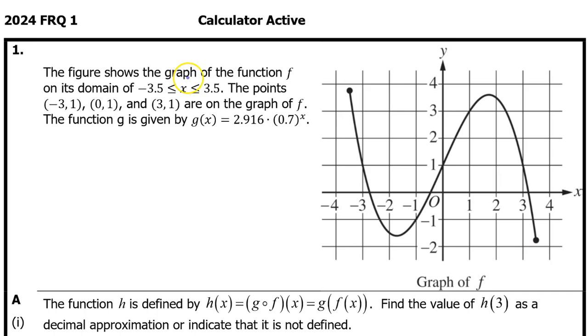The figure shows the graph of the function f on its domain from negative 3.5 to positive 3.5. The points negative 3,1, 0,1, and 3,1 are on the graph of f. The function g is given by g of x equals 2.916 times 0.7 to the x power.